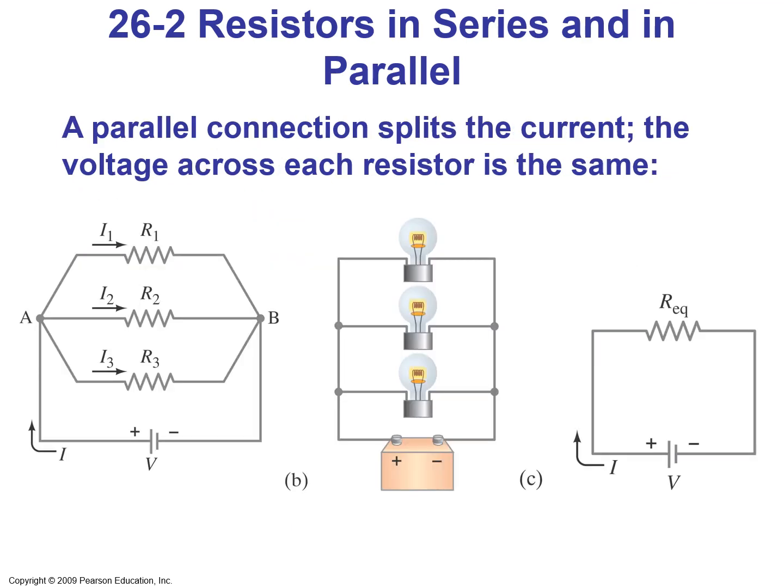On the other hand, a parallel connection splits the current. The voltage across each resistor is the same. We have three resistors R1, R2, and R3 connected in parallel with the same voltage VAB between them, but the current I is split between the three resistors — current I1 goes through R1, current I2 passes through R2, and current I3 passes through R3.